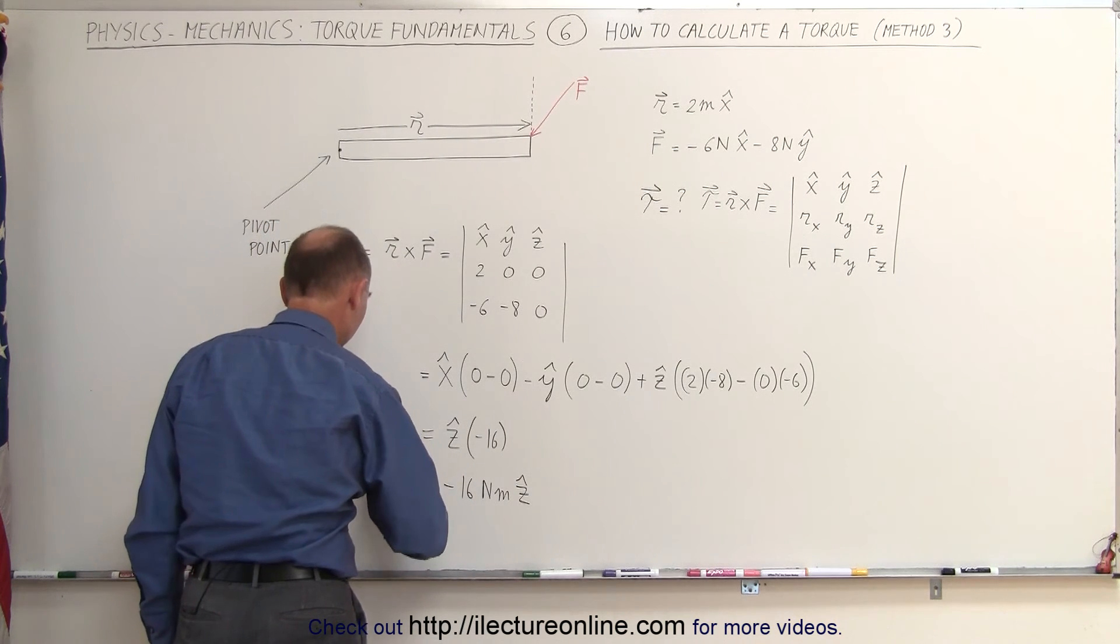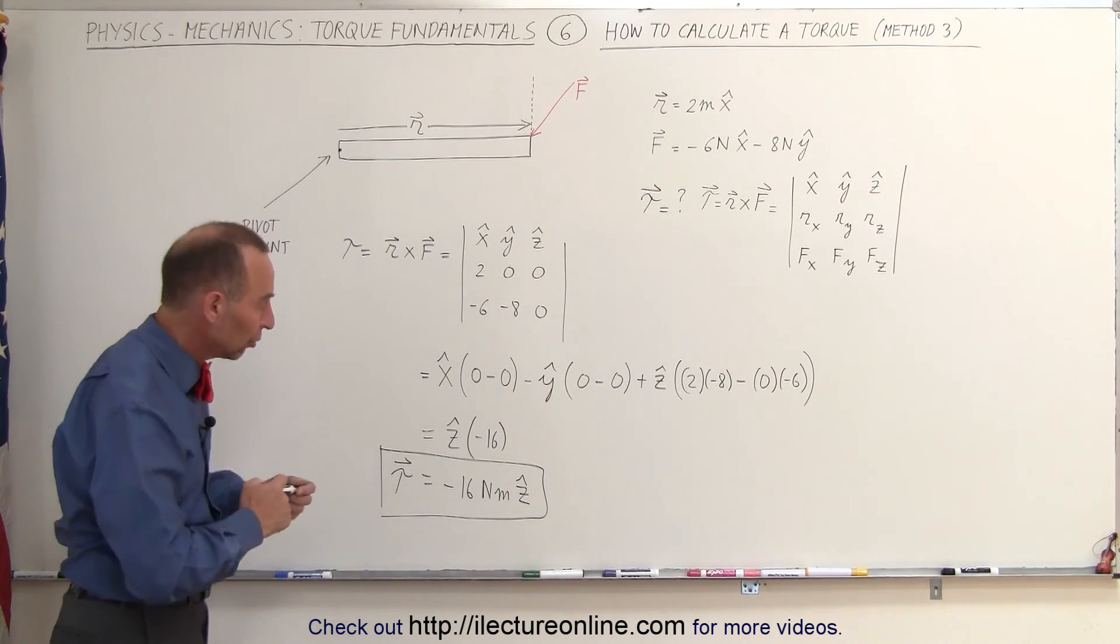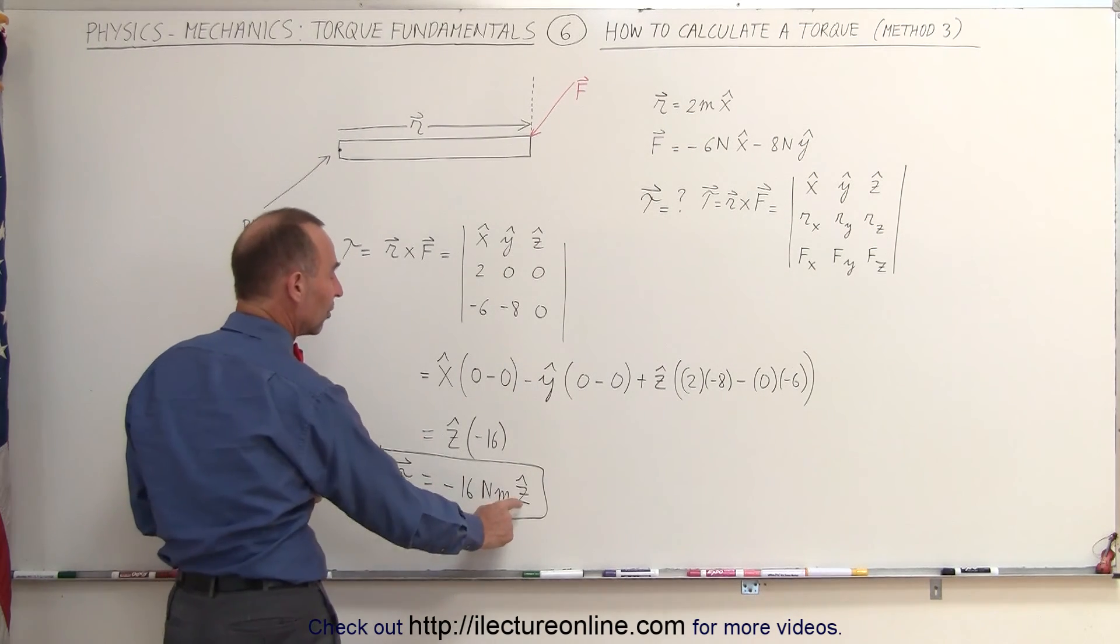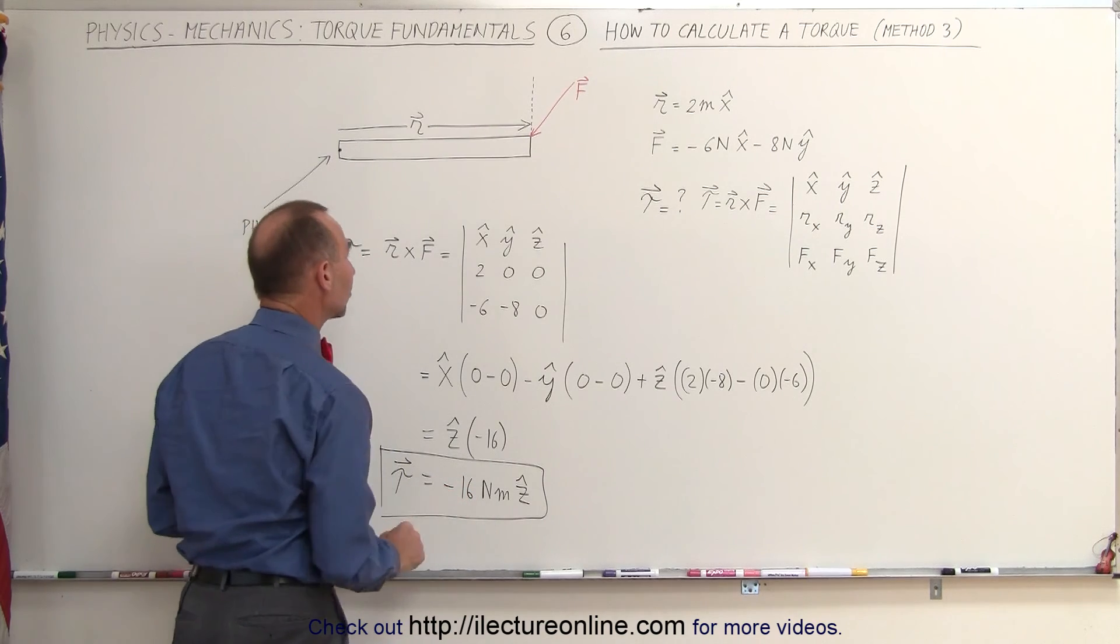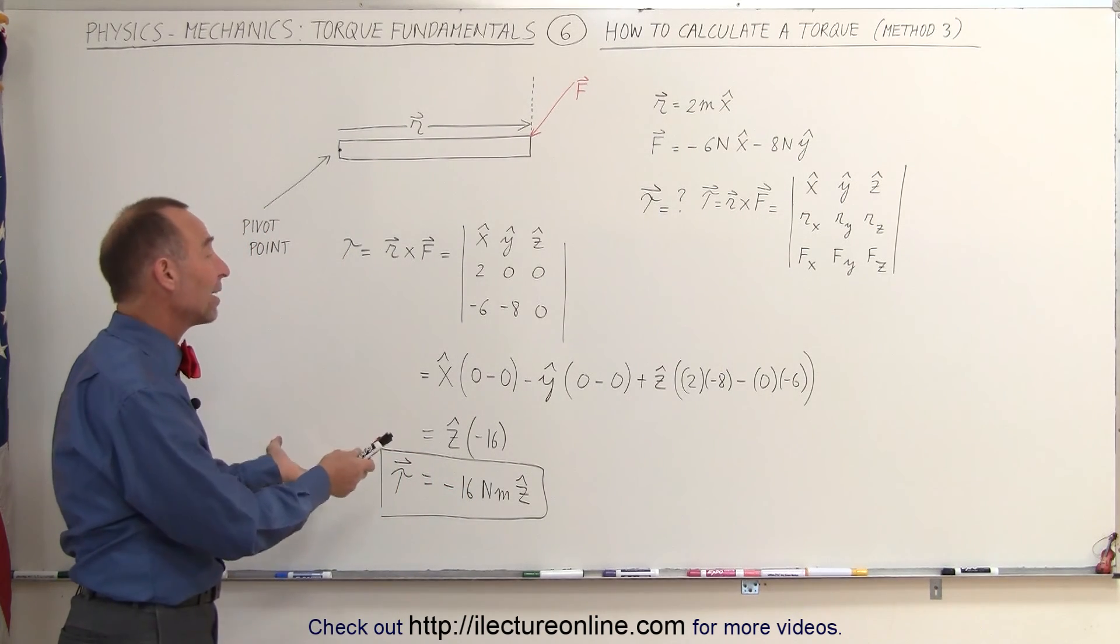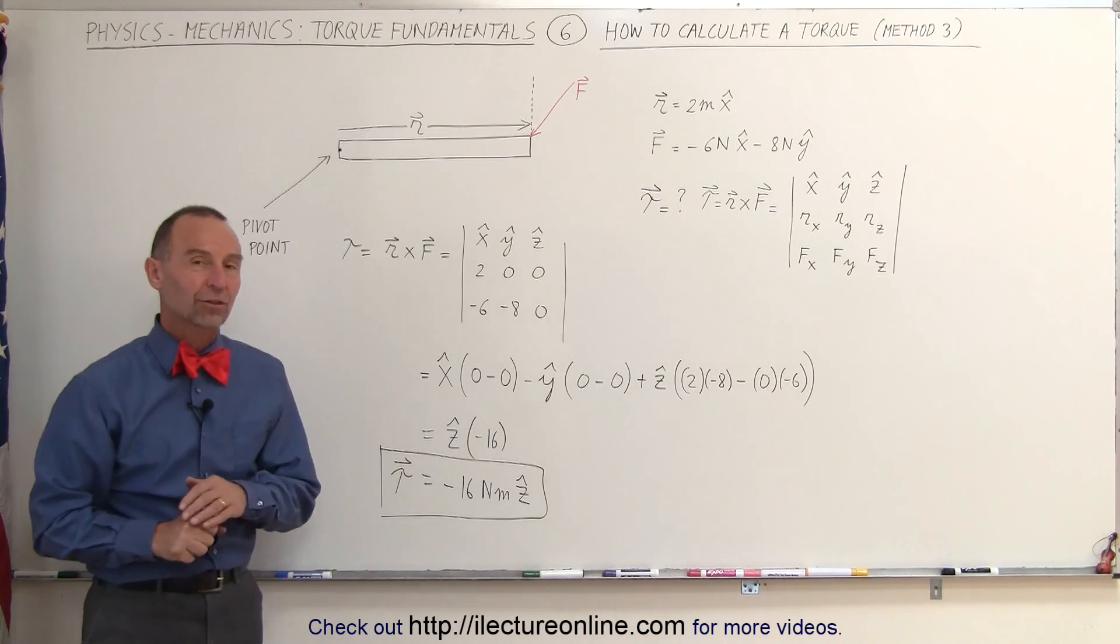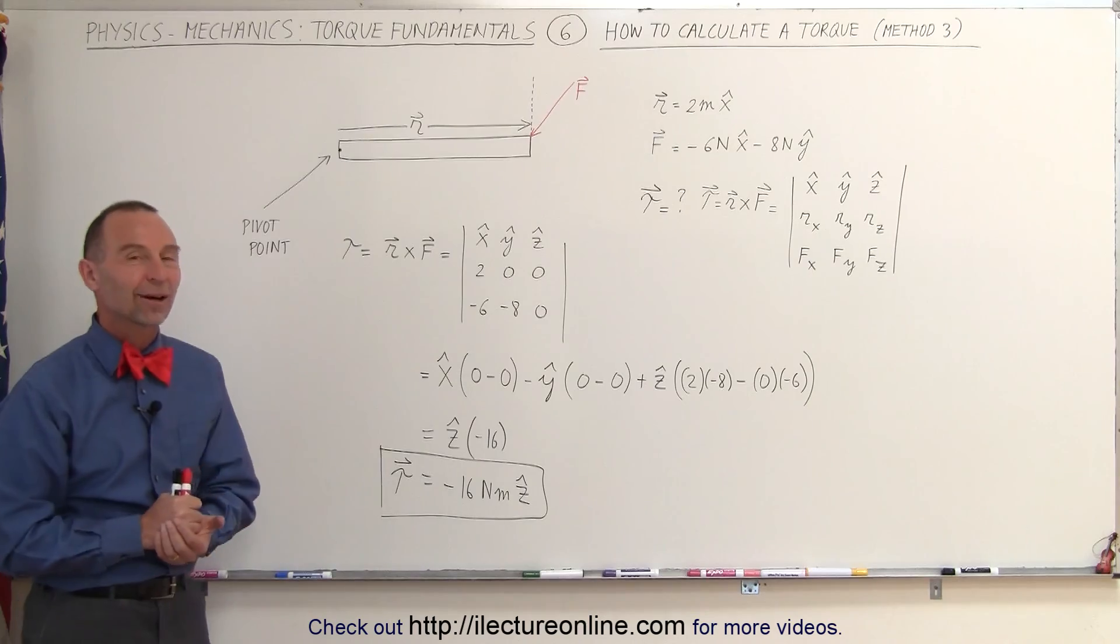That's the torque, because we always talk about vectors in terms of their magnitude and direction. So the magnitude is 16 newton meters, the direction is in the negative z direction, which in this case would be into the board. And that's how we find the torque in case everything is given to you in terms of vectors and vector quantities.